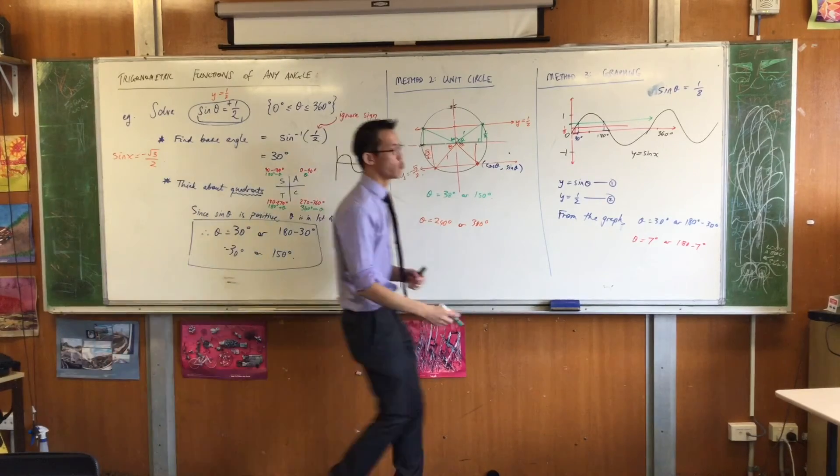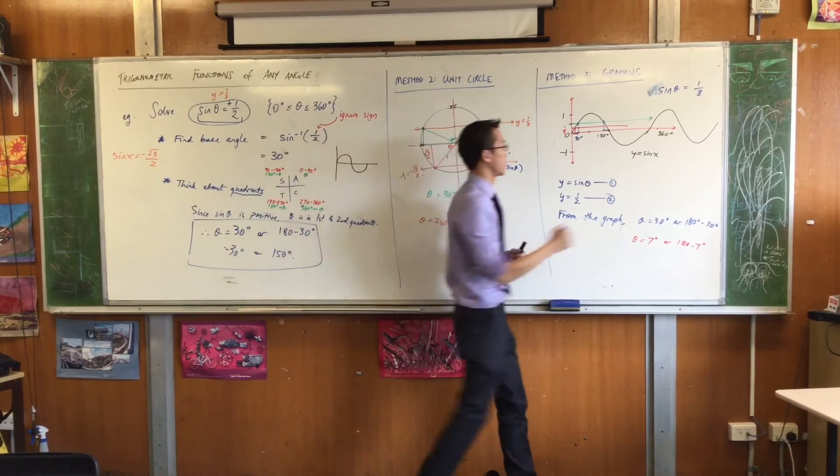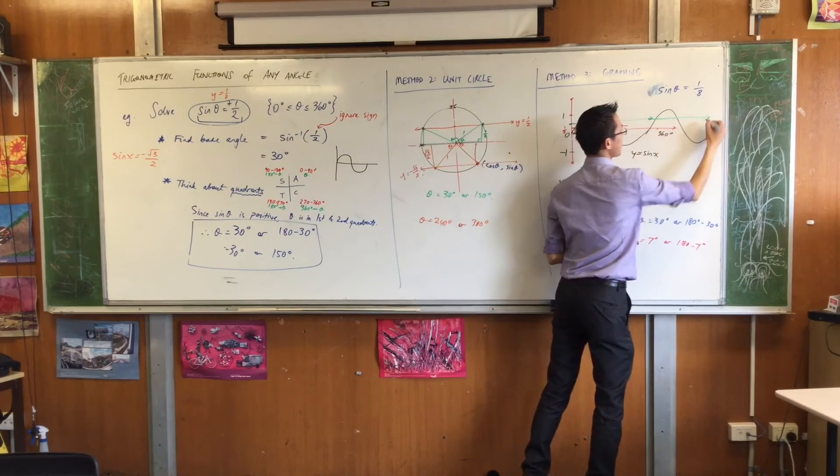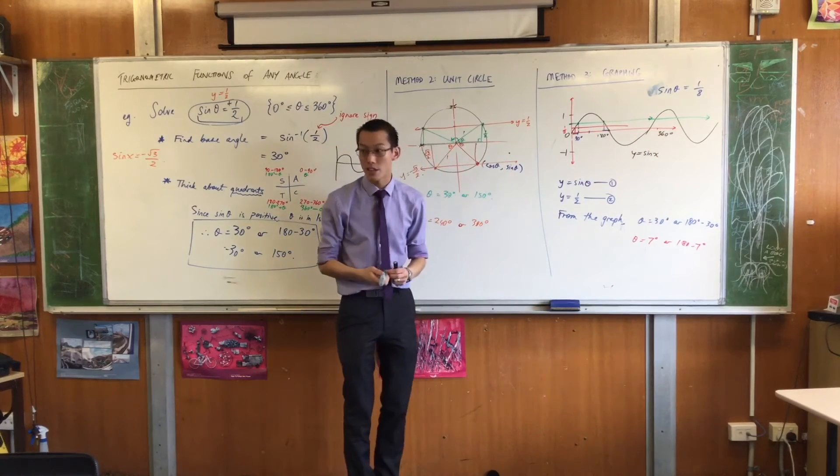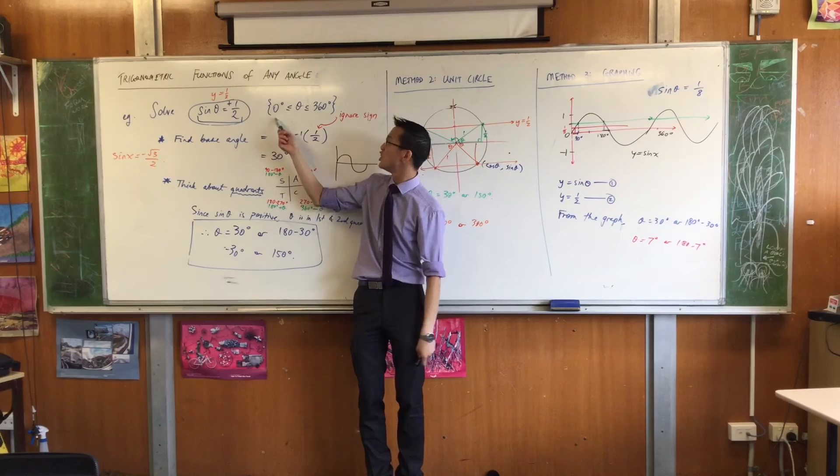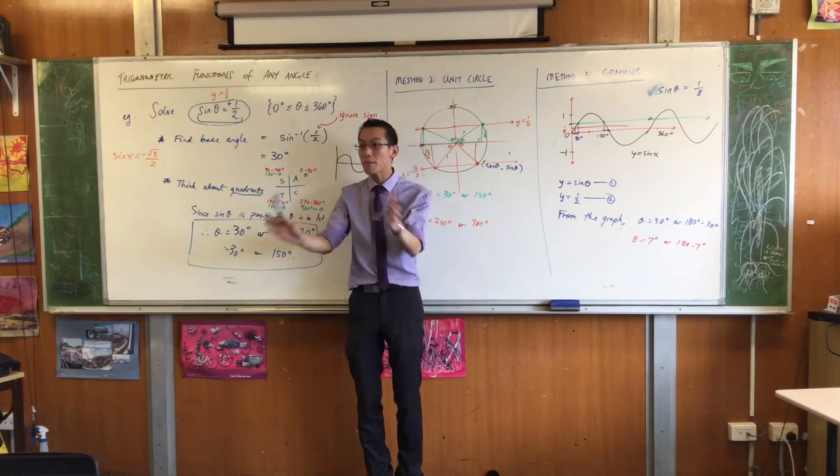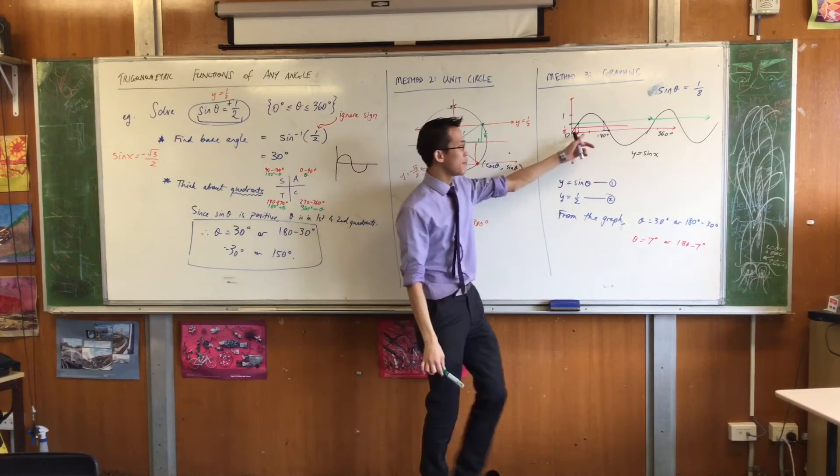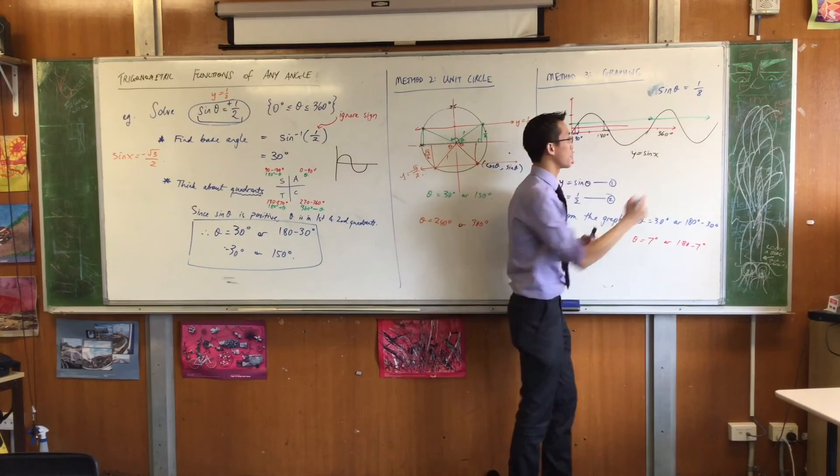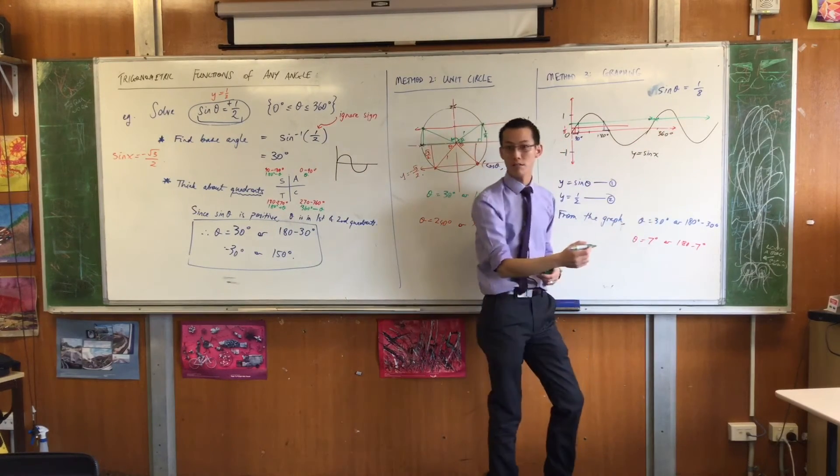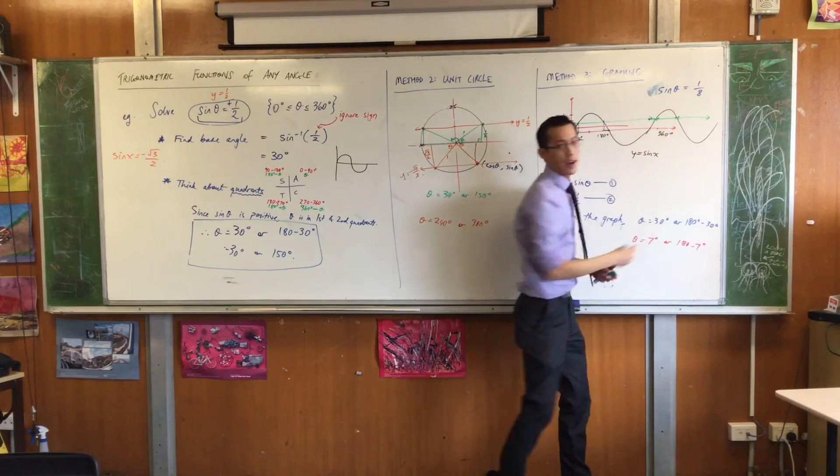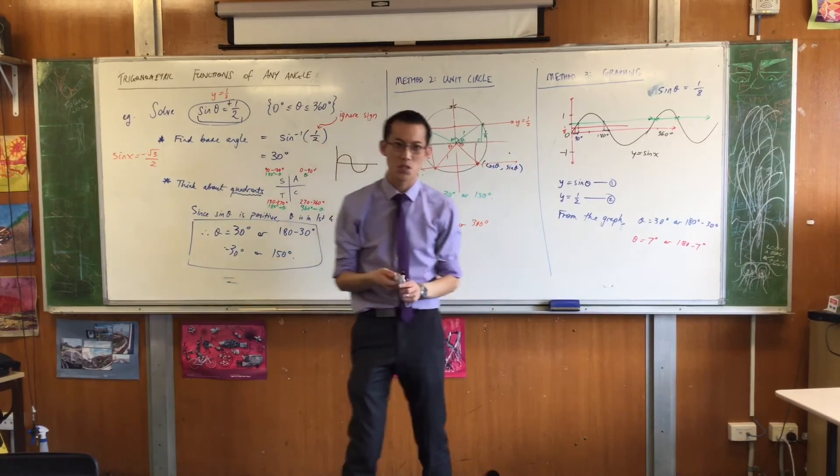Now have a look at my original y equals a half line. If I were to extend the domain, 0 to 720 or 0 to 1080 or whatever I like, I can see my graph is just going to go further, so I'm going to get, that's 390 right there. That's 510. Can someone tell me how I knew it was 390?